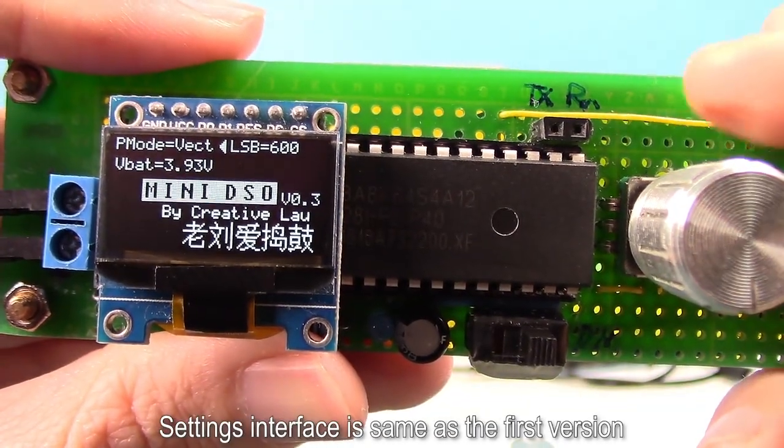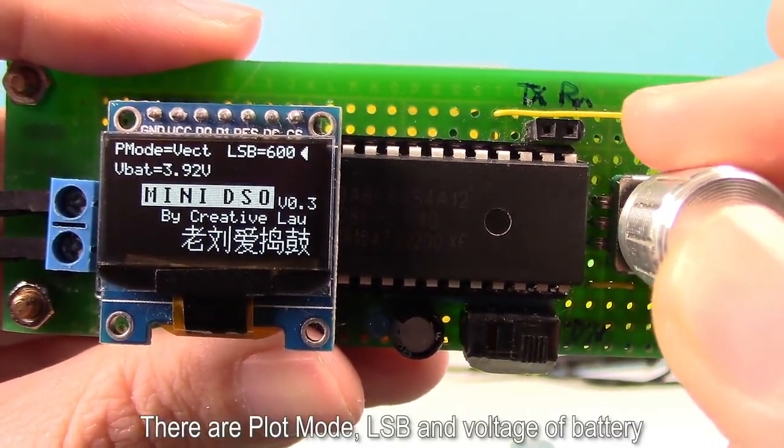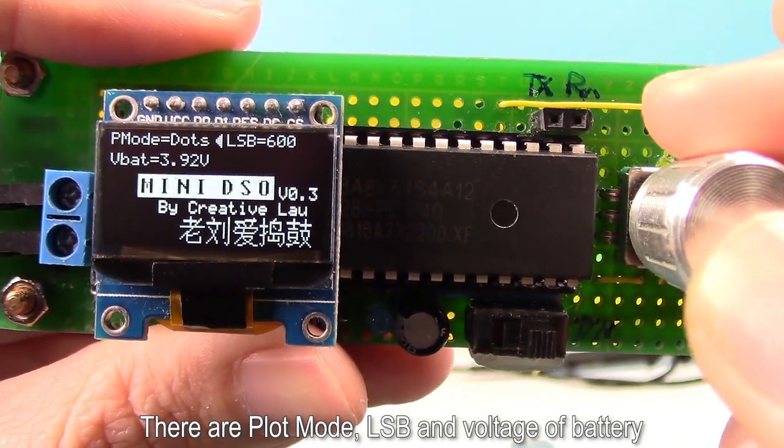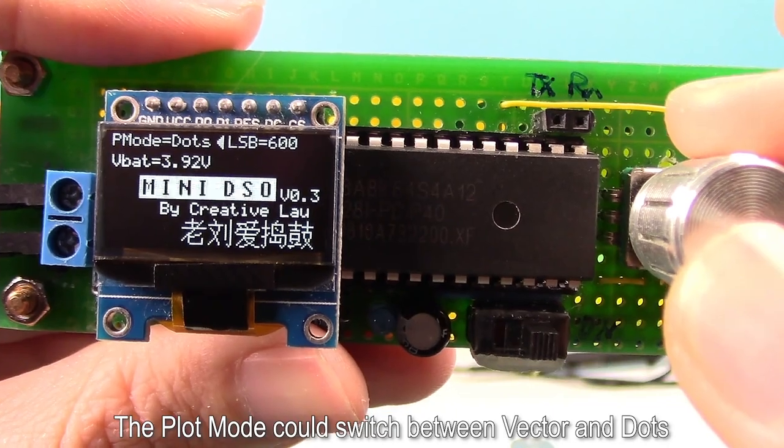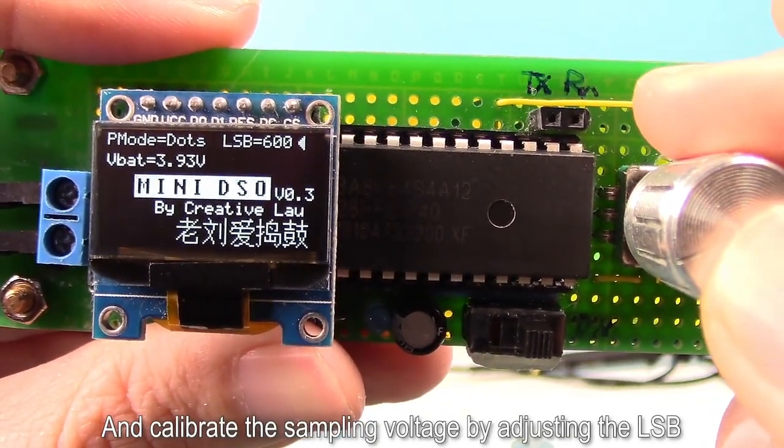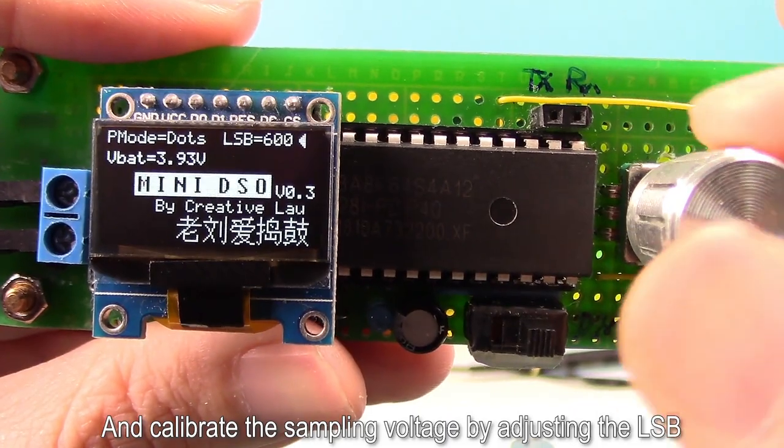Settings interface is same as the first version. There are plot mode, LSB, and voltage of battery. The plot mode could switch between vector and dots. And calibrate the sampling voltage by adjusting the LSB.